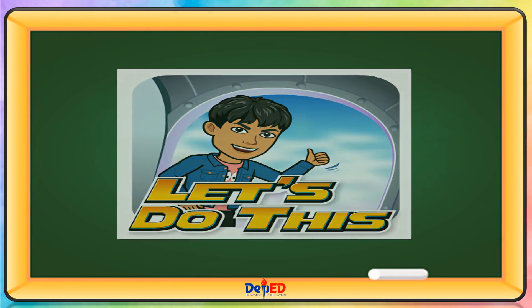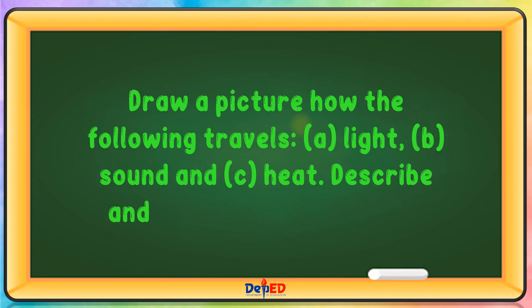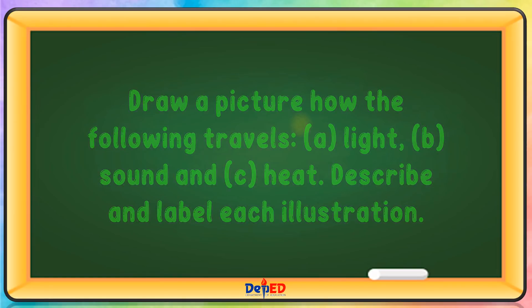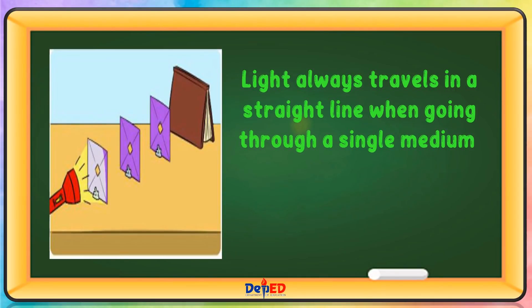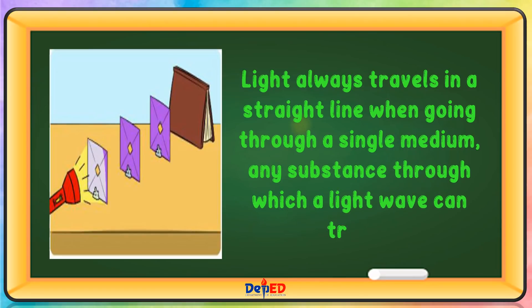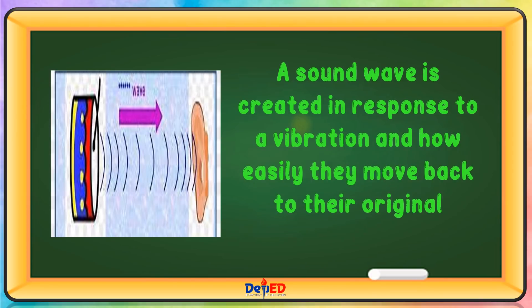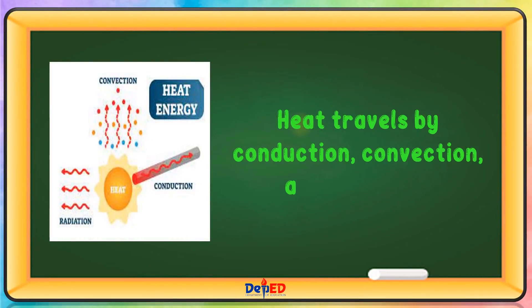Let's do this — draw a picture of how the following travel: A. Light, B. Sound, and C. Heat. Describe and label each illustration. Light always travels in a straight line when going through a single medium. A sound wave is created in response to a vibration and how easily particles move back to their original position. Heat travels by conduction, convection, and radiation.